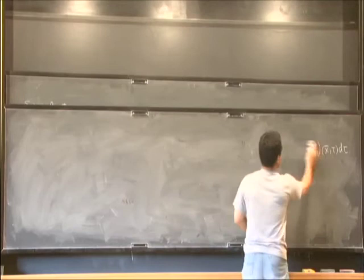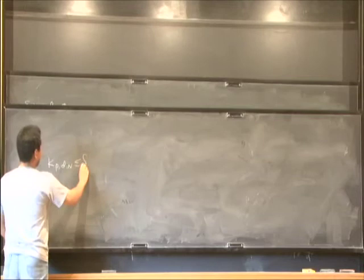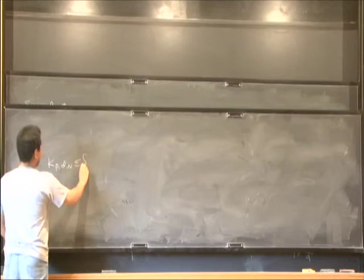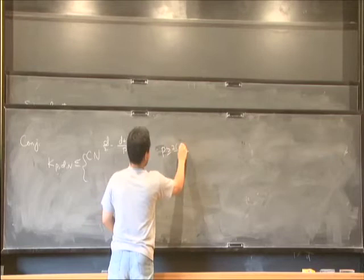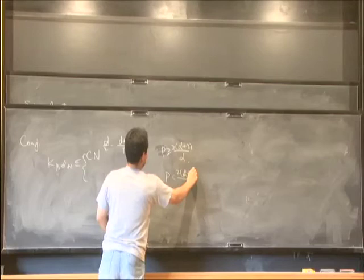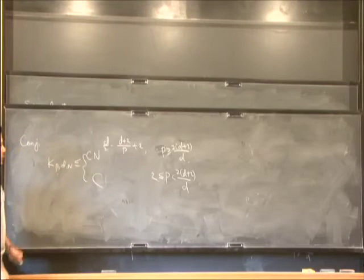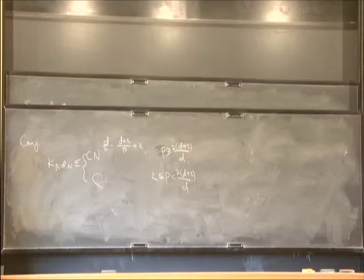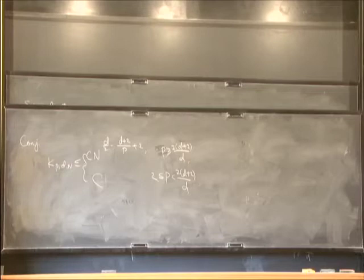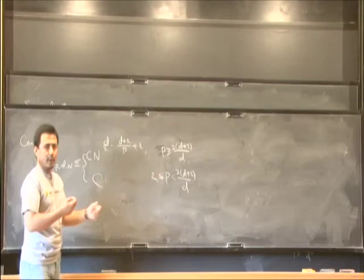The conjecture here is this K_(p,d,N) would be bounded by N^(d/2 - (d+2)/p + ε). As we said, when p is larger than or equal to 2(d+2)/d, and when p is between these two, it should be a constant. So far, this conjecture is not fully understood, even when d equals 1. Our remark is that epsilon should be able to remove if p is strictly larger than the critical index.